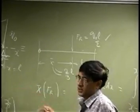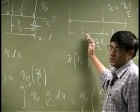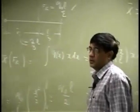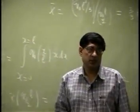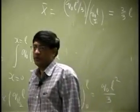For loading like this, you do not have to go through the integration. That means you find the area of the triangle—that should be the resultant—and then you place the loading at 1/3 from the base.